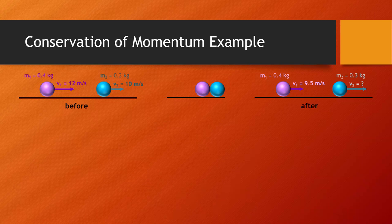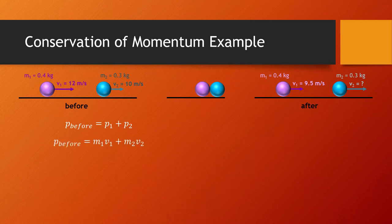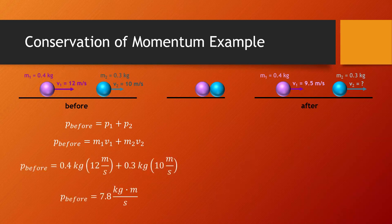Let's calculate the speed of the blue ball after the collision. Before the collision, the total momentum of the system is the momentum of object 1 plus the momentum of object 2. We can write this more practically as P before equals M1V1, which is the momentum of object 1, plus M2V2, which is the momentum of object 2. We can plug in our known values for mass and velocity, and we find that the momentum before the collision of the whole system is 7.8 kilograms meters per second.